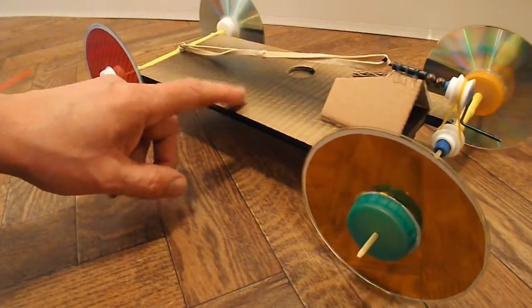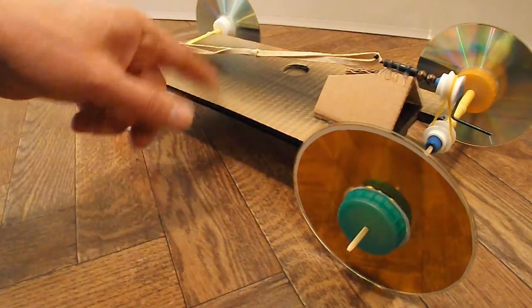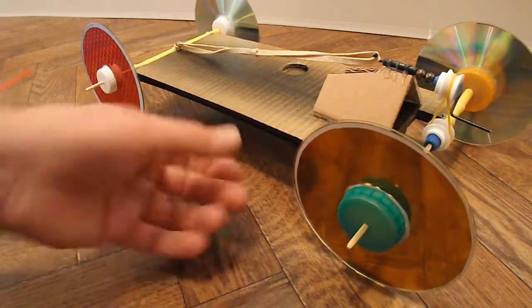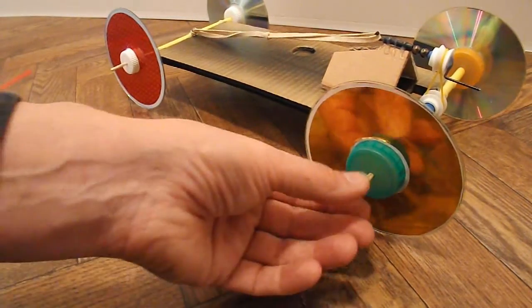The body is just some thick cardboard. It's actually from one of my previous projects, which is why it's already sprayed gold and black. The wheels are all CDs with bottle tops in the middle for the hubs.